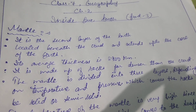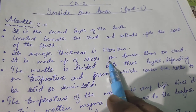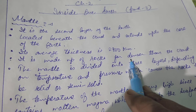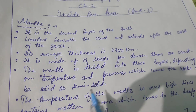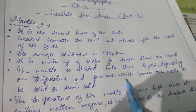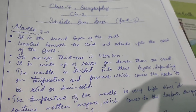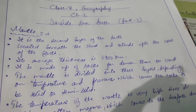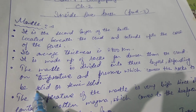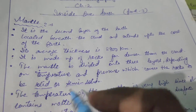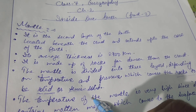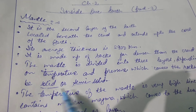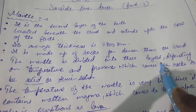The average thickness of the mantle is around 2900 km from the top layer of the Earth. It is made up of rocks far denser than the crust — the rocks and minerals found in this layer are denser than those found in the crust. The mantle is divided into 3 layers depending on temperature and pressure, which causes the rocks to be in solid or semi-solid state due to extreme temperature and pressure.